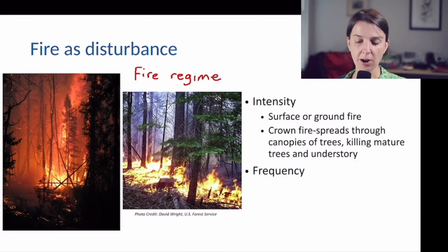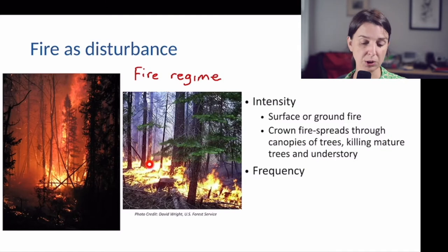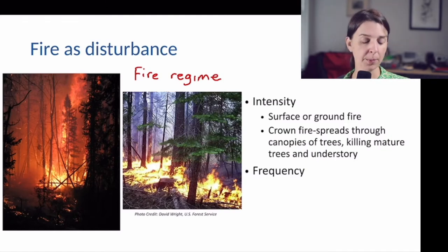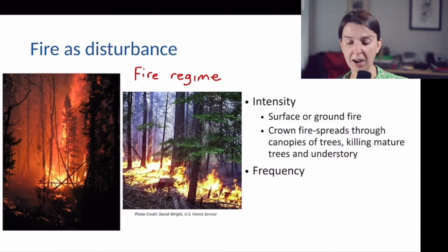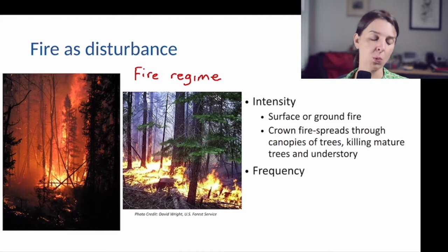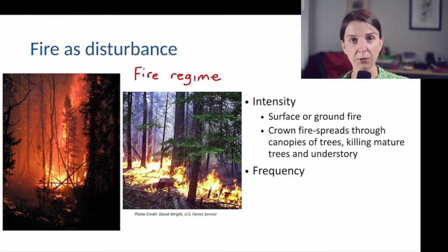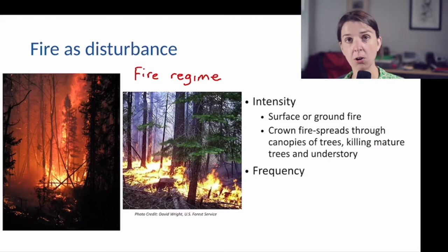In contrast, high-intensity fires are ones where fire may start as a surface fire but quickly spreads to the crown. This is a crown fire — when fire reaches the crowns of the overstory trees, the tall trees in a forest.